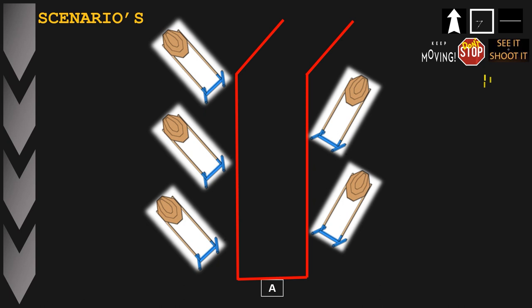During the next slides we're going to review different scenarios you might encounter during training and match stages, always referring to and using the three principles shown in the top right corner of the slide. As a layout, each slide will depict part of a stage — either with a static starting position or with arrows indicating the direction we are coming from.